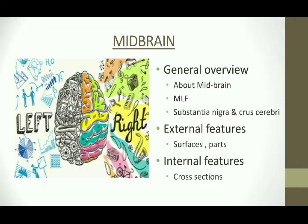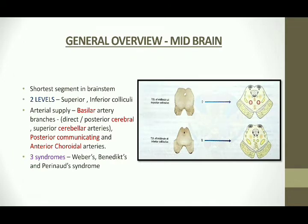This is all about pons, and now we will move on to the midbrain. The midbrain is the shortest segment in the brain stem. It has two levels: one at the superior colliculus and the other at the inferior colliculus. Blood supply is mainly by three arteries: the basilar artery with its direct branches, the posterior cerebral and superior cerebellar arteries, the posterior communicating artery, and the anterior choroidal artery. Three named syndromes are associated with midbrain lesions: Weber's, Benedict's, and Parinaud's syndrome.